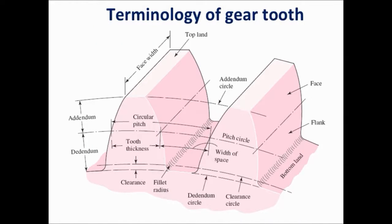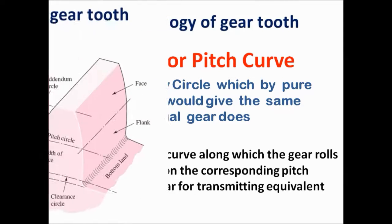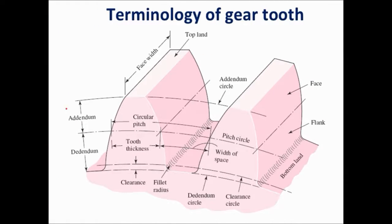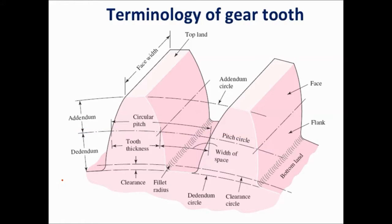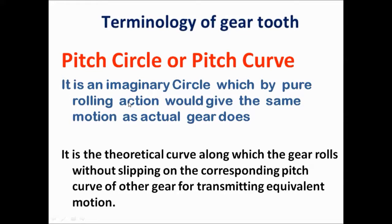The next term is pitch circle. As you can watch in this image, this curve shows the pitch circle. Pitch circle is an imaginary circle which, by pure rolling action, would give the same motion as the actual gear does. It is the theoretical curve along which the gear rolls without slipping on the corresponding pitch curve of the mating gear.